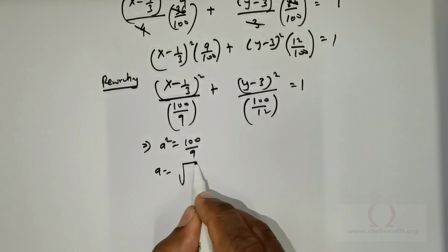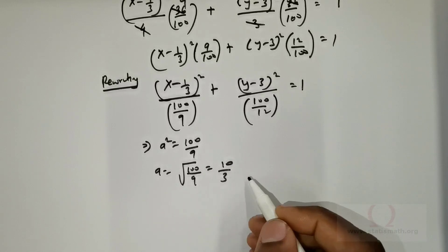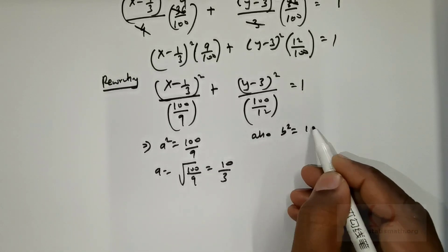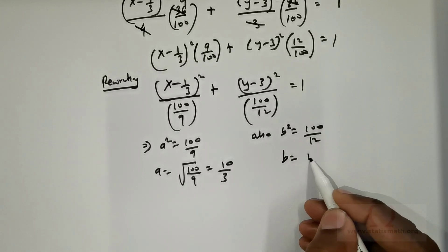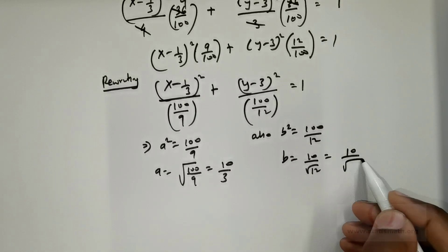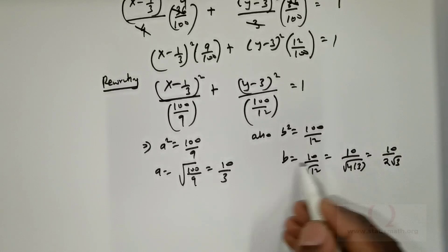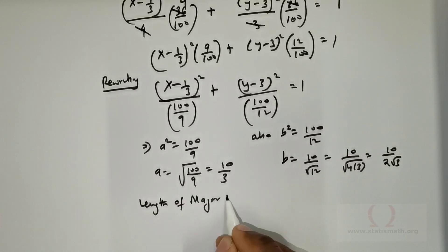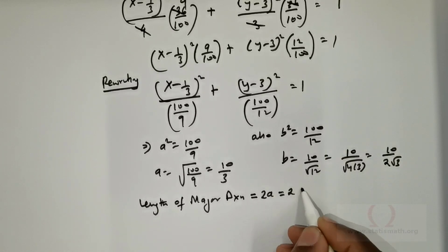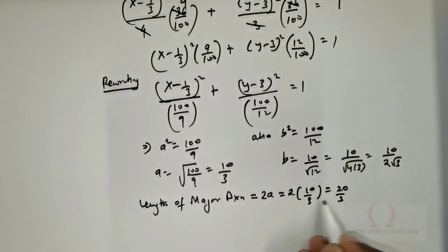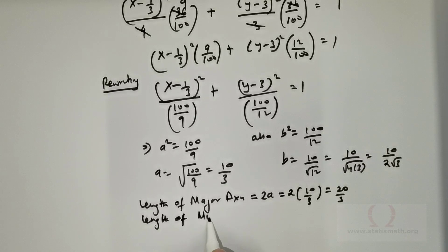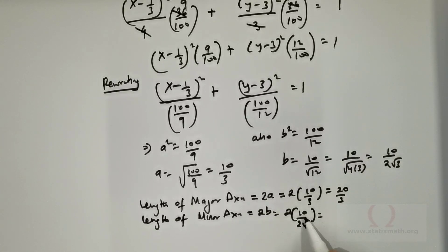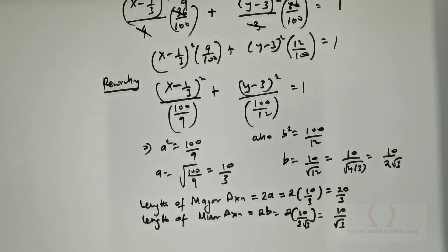Therefore a = 10/3 and b = 10/(2√3). The length of the major axis is 2a = 20/3, and the length of the minor axis is 2b = 10/√3. This completes the solution.